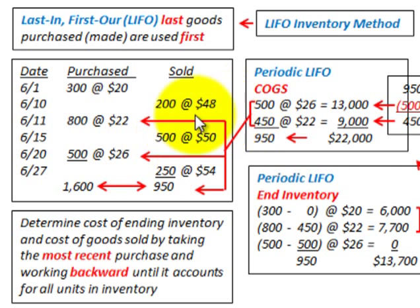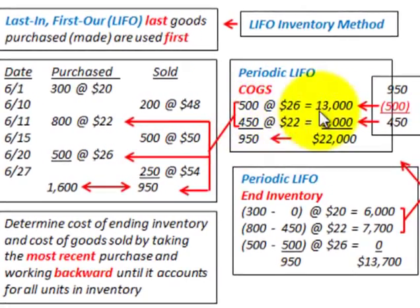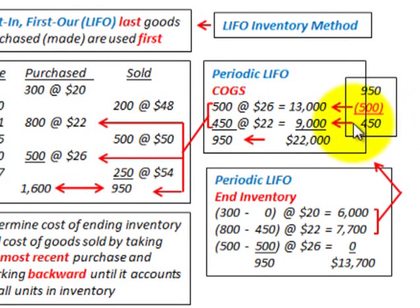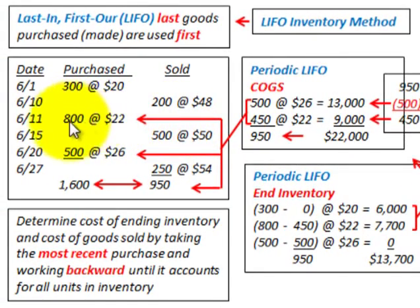For cost of goods sold: we used all 500 of the most recent units at $26 per unit, giving us $13,000. For the remaining amount — we had 950 total sales, assigned 500, leaving 450 units — those 450 come from the 800-unit batch at $22 each, giving us $9,000. So total cost of goods sold for the 950 units is $22,000.